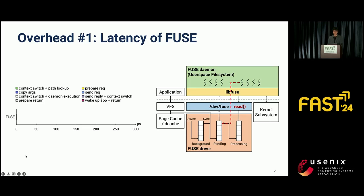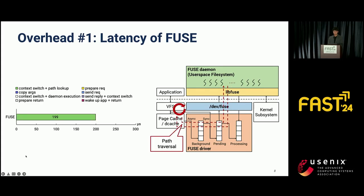Initially, when a user space file system is mounted, the FUSE daemon waits for a request by performing a read system call on the FUSE device file. Let's assume the application performs a create system call on NURFS. When the application calls create, a context switch to kernel mode occurs first, then in the VFS layer, a path traversal is performed following the path components of the target file to check the existence of subdirectories and files. At this point, the lookup for each path component is converted into a FUSE request and passed to the user space FUSE daemon, involving a context switch between the kernel and user space, resulting in a relatively long latency of almost 200 microseconds.